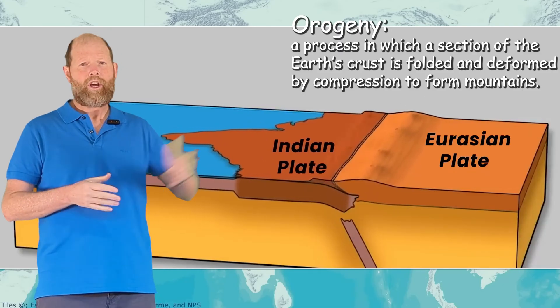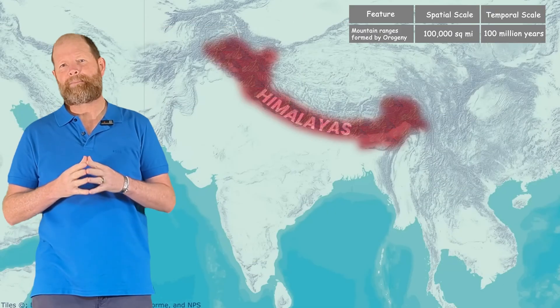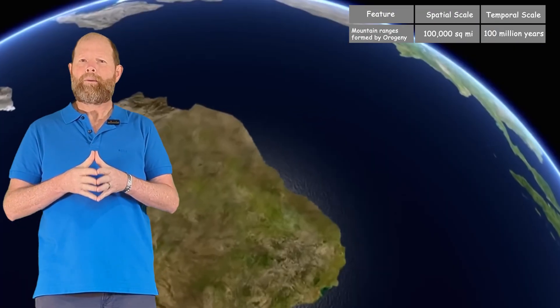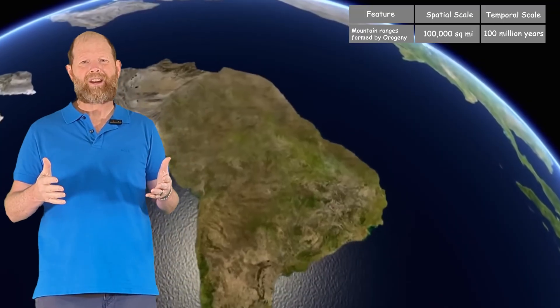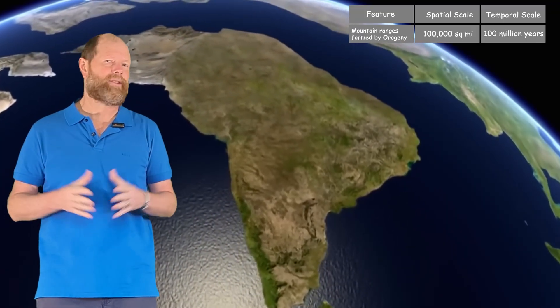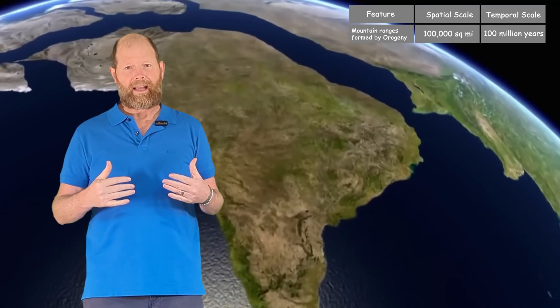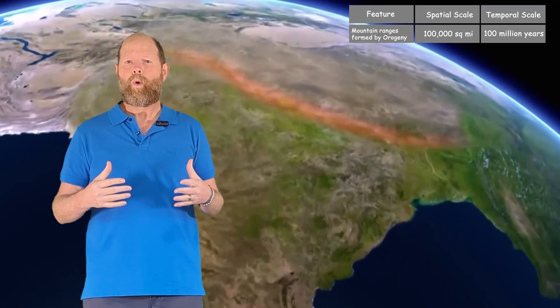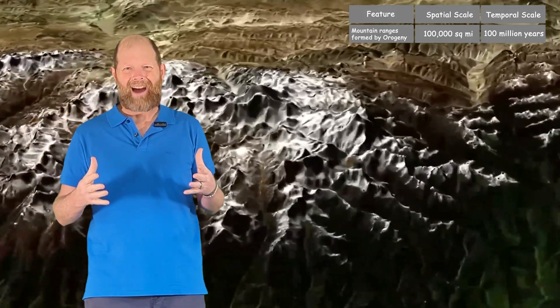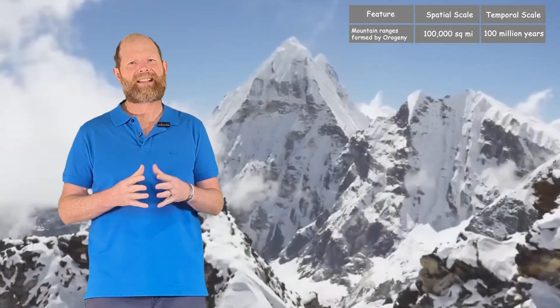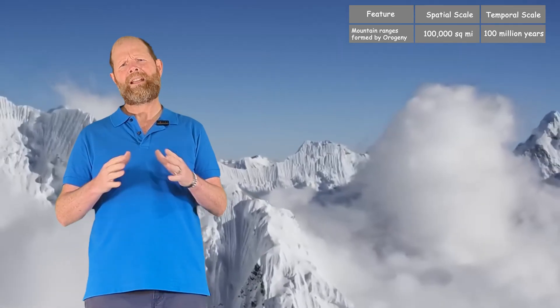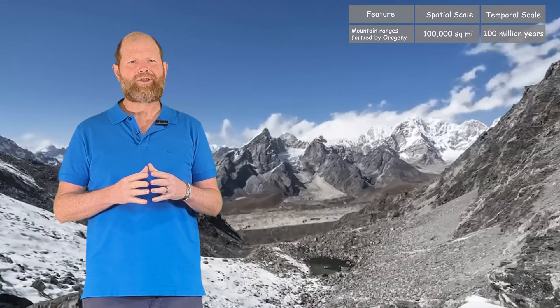For each feature, you will see a table with its spatial scale and its temporal scale. For example, mountain ranges formed through orogeny spatially average hundreds of thousands of square miles of Earth's surface. Temporally, they take around 100 million years to form. These will all be estimates of averages in order to help you compare the size and deformation times of each feature. Now, let's get back to those convergent boundaries.